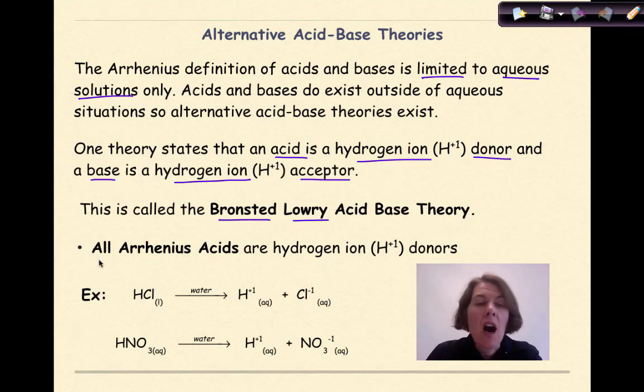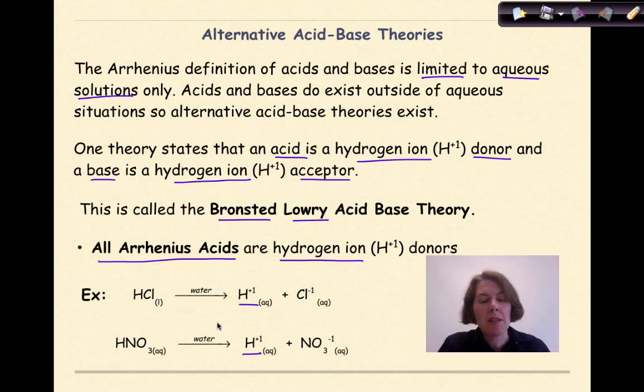So in this theory, all Arrhenius acids are hydrogen ion donors. In other words, when that acid ionizes, it's always going to produce a hydrogen ion. So HCl in water will produce hydrogen ions. HNO3 in water will produce hydrogen ions. And this is a good thing, because that means the definition for the Arrhenius acids, which we've already learned, also applies to the Bronsted-Lowry definition of acid.